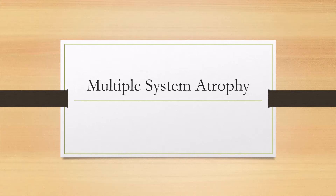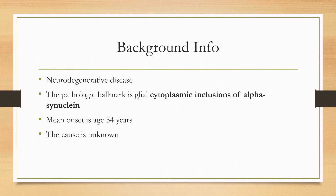Let's talk about multiple system atrophy. This is a neurodegenerative disease where the main pathologic hallmark is glial cytoplasmic inclusions of alpha-synuclein. Remember that this is an alpha-synucleinopathy as opposed to a tauopathy. The mean age of onset is 54 years old and the cause is unknown.